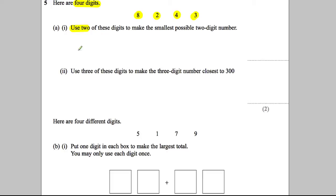Use two of these digits to make the smallest possible two-digit number. Okay, so we want to make a two-digit number that's as small as we can.